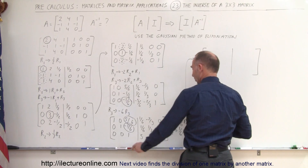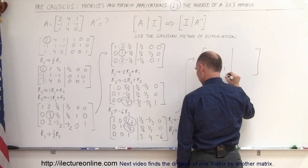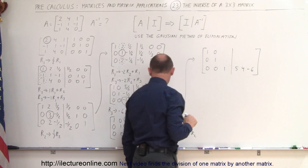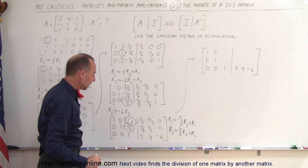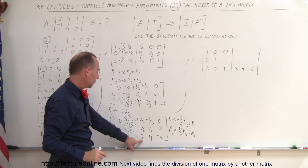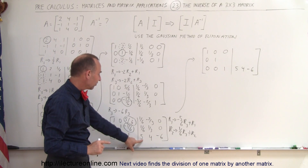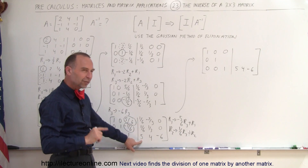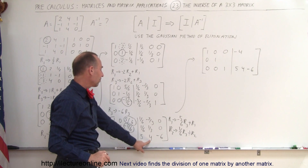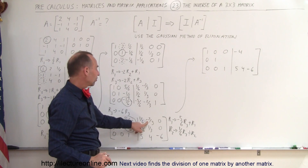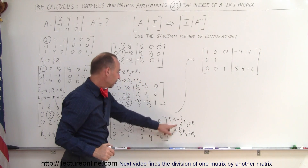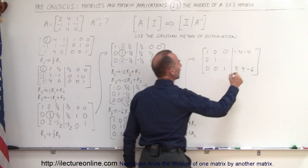The third row doesn't change: 0, 0, 1, 5, 4, negative 6. The first and second columns don't change. For the first row: negative five sixths times 5 is negative twenty-five sixths, added to one sixth gives negative twenty-four sixths, which is negative 4. Negative five sixths times 4 is negative twenty sixths; with the one sixth gives negative four. Negative five sixths times negative 6 cancels the 6, giving positive 5, added to 0 is positive 5.